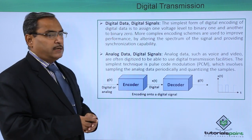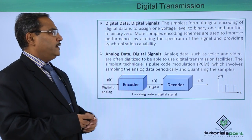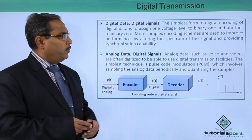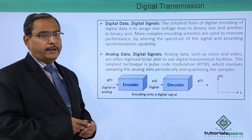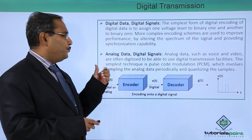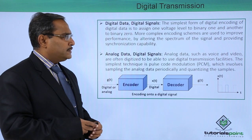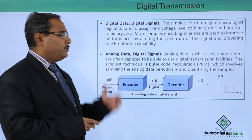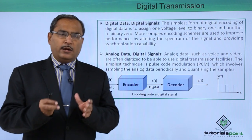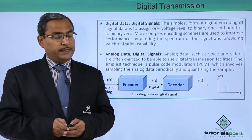In case of digital data digital signal, the simplest form of digital encoding of digital data is to assign one voltage level to binary 1 and another to binary 0. More complex encoding schemes are used to improve the performance by altering the spectrum of the signal and providing synchronization capability. The data will be converted to the respective digital signal.